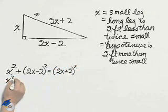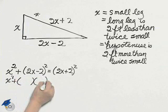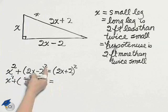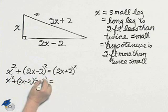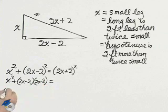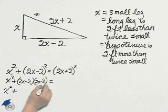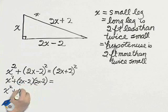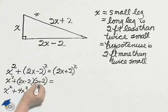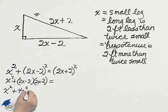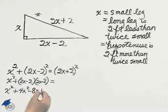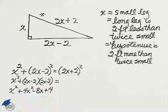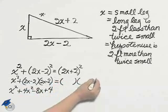Solving this, I have x squared plus — now, on a binomial when you square it, you have (2x minus 2) times (2x minus 2). FOILing: two x times two x is four x squared. Minus four x minus four x is minus eight x.